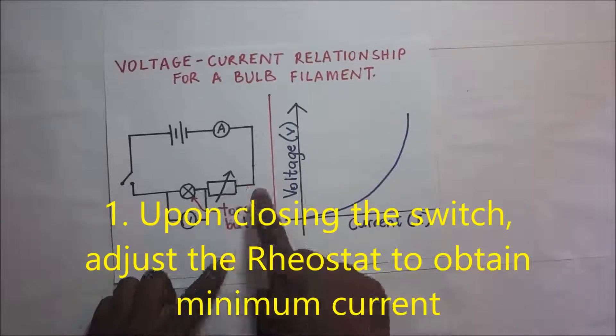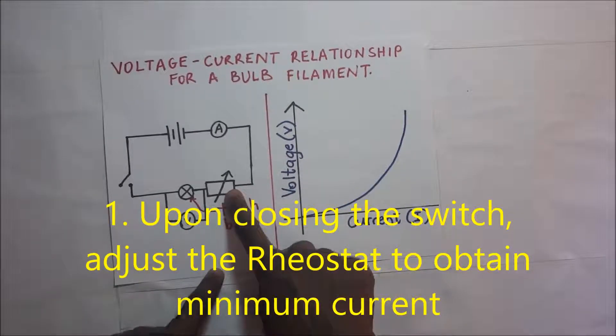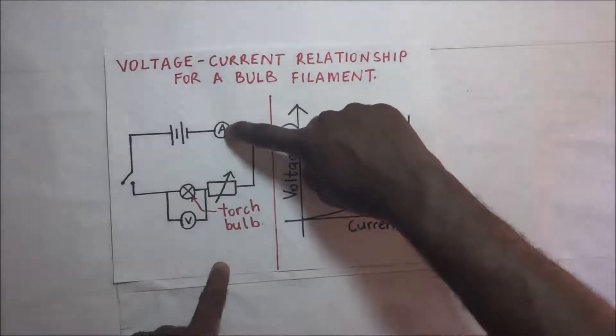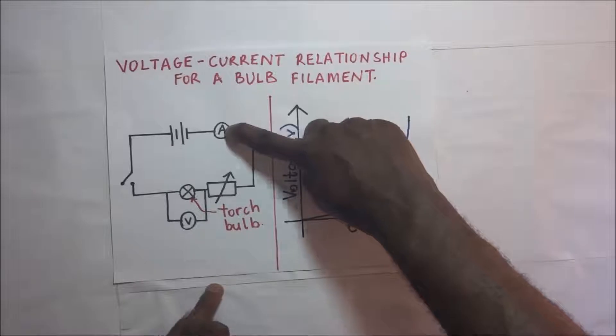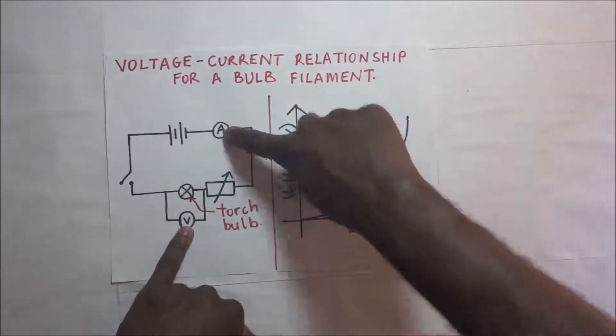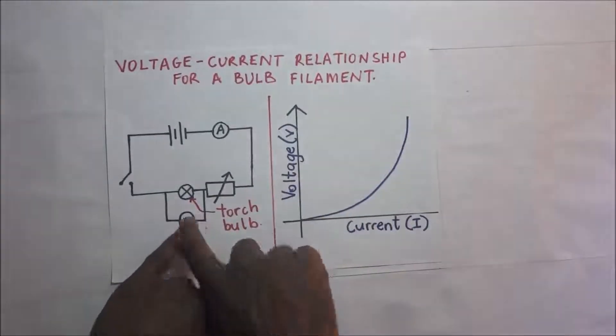When we adjust this rheostat, we adjust it in such a way that we set it to a very high resistance so that we begin with a low current. When we begin with a low current, then we go ahead and read off this low current and the voltage right there.